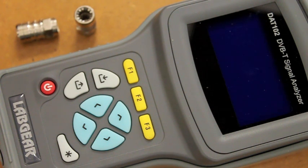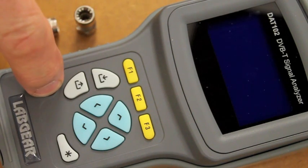Introducing the Labgear DAT 102 Digital TV Analyzer. Switch it on by holding the power key.